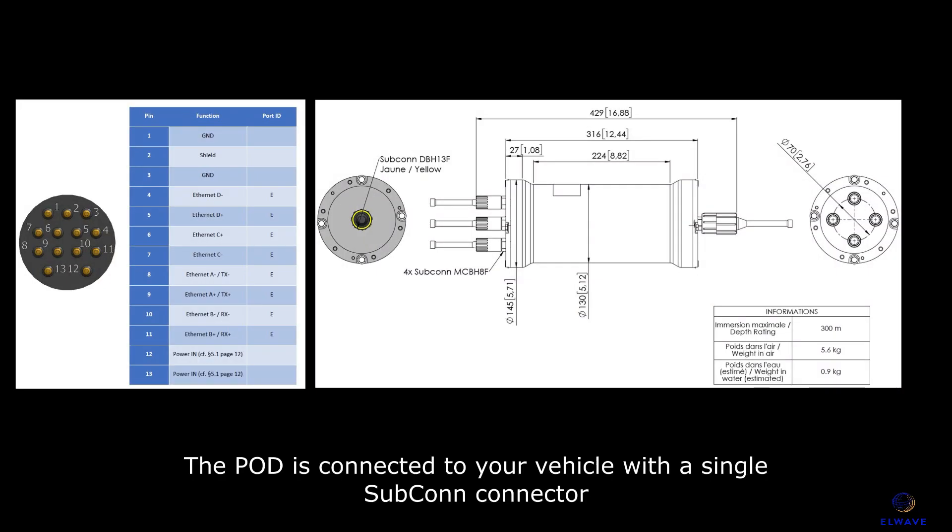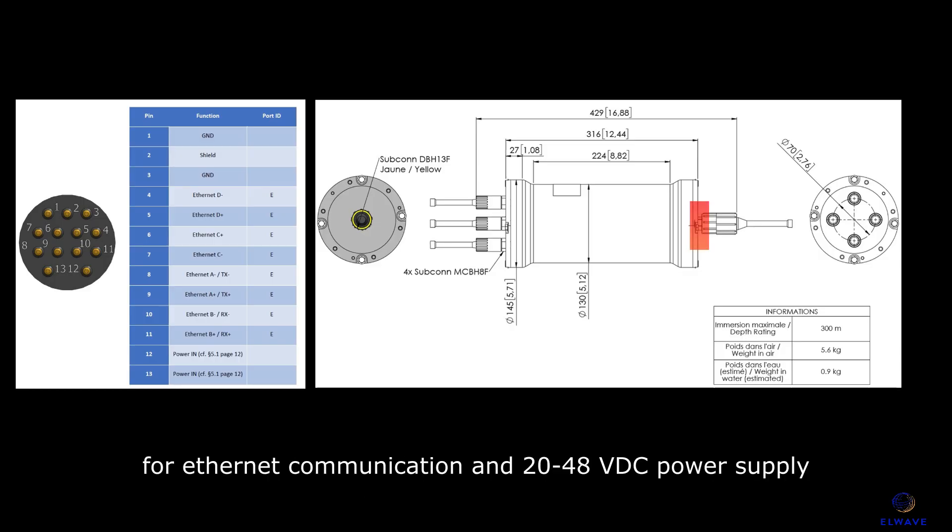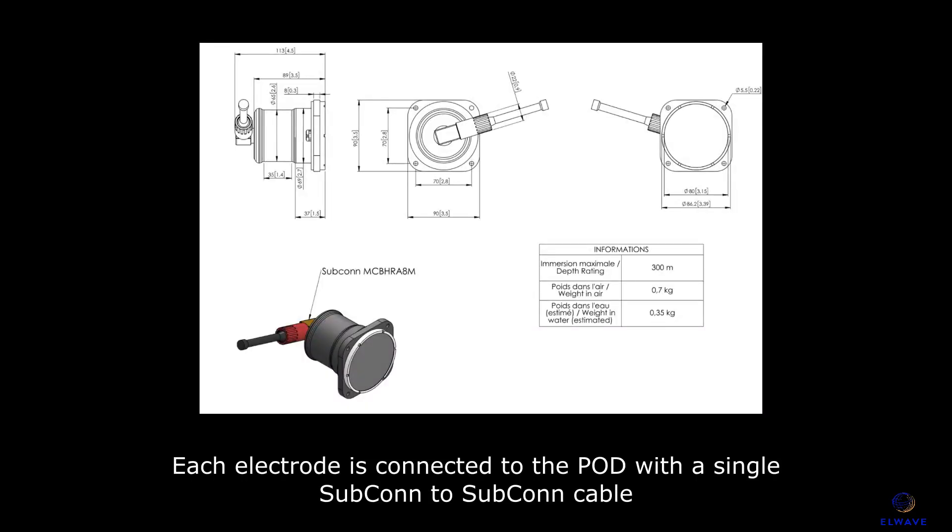The pod is connected to your vehicle with a single SubConn connector for Ethernet communication and 20 to 48 volt DC power supply. Each electrode is connected to the pod with a single SubConn to SubConn cable.